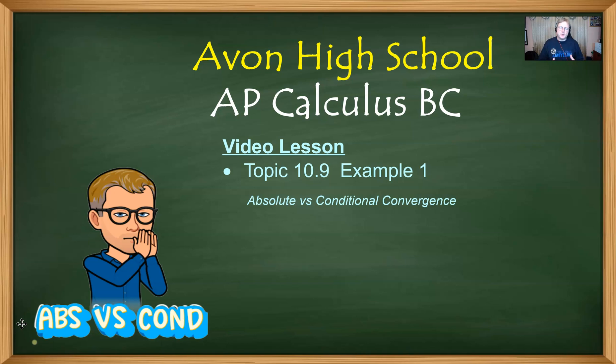Remember that topic 10.7 will still leave us a little hanging. When we have an alternating series, which is a series where the terms alternate signs, positive to negative, positive to negative, we still don't see the big picture in terms of convergence and divergence. That's why we have to piggyback 10.9 onto that information because we have to talk about the two different kinds of convergence, absolute and conditional, because the AP exam is going to request that information more often than not.